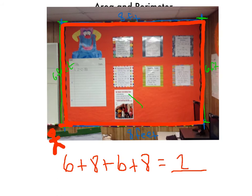So six plus six is 12, and eight plus 12 is 20, and 20 plus eight is 28. So the perimeter is 28 feet — just feet, because you just walked around. It's just a measurement walking around. And they're not always going to be the same — area and perimeter are not the same thing.